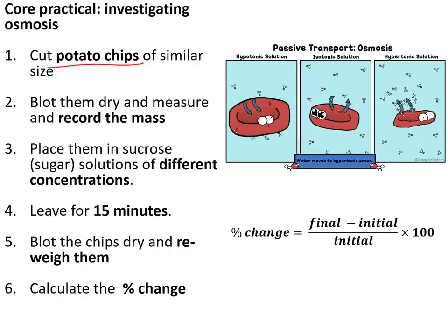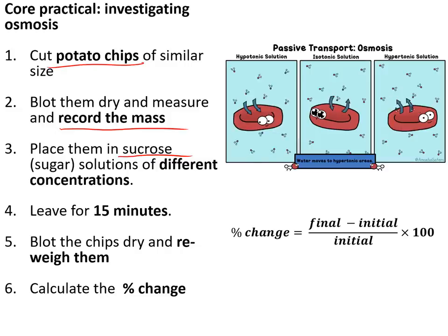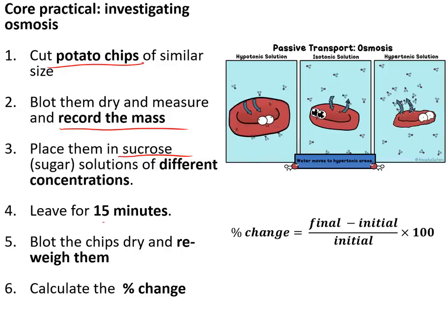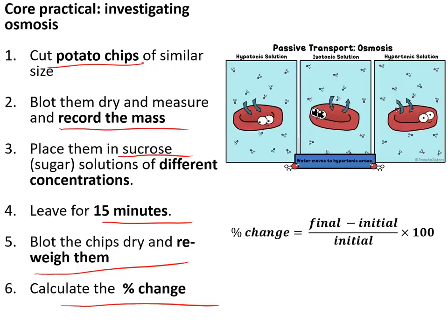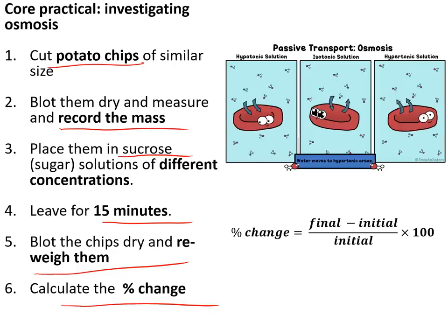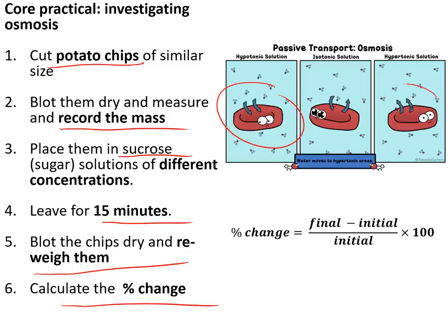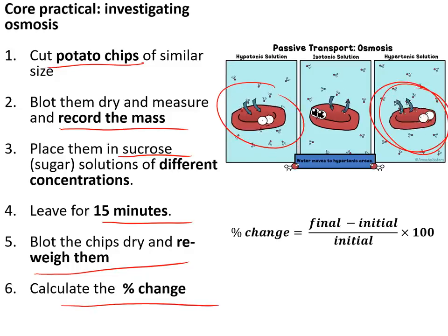The osmosis core practical involved taking potato chips of similar sizes, recording their mass, and placing them in sucrose solutions of different concentrations. After 15 minutes we re-weighed them and calculated the percentage change. The chips in the lowest concentrations of sugar increased in mass because water entered them by osmosis, and chips in the highest concentrations of sugar decreased in mass because water left them by osmosis.